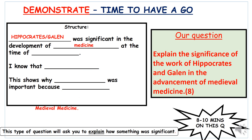Here's how you might write a significance answer. Use the word 'significance' or 'significant' in your first sentence. For example: 'Hippocrates was significant in the development of medicine at the time of medieval medicine.' Then use 'I know that...' to talk about his key idea — what it means, why it made him important. Remember both Hippocrates and Galen died long before medieval times but were still influencing what people believed and did — that's the argument you want to make.